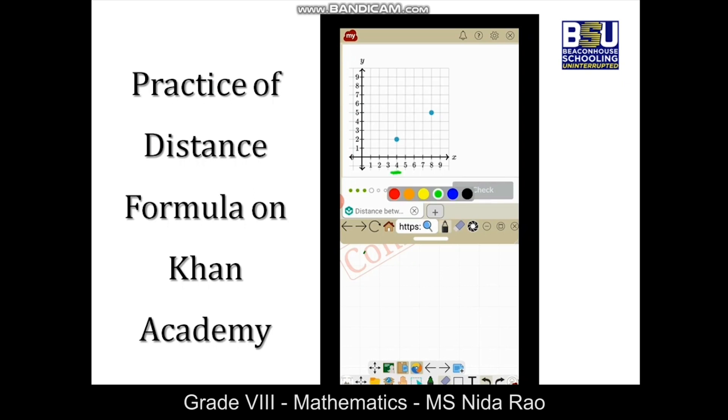The x coordinate of this point is 4 and the x coordinate of this point is 8. So we will apply the distance formula: d = √[(x₂ - x₁)² + (y₂ - y₁)²]. So 8 minus 4, that is 4². Plus now the y coordinate of this point is 5 and the y coordinate of this point is 2, so 5 minus 2, that is 3². So 4² is 16 and 3² is 9, so this is √25.